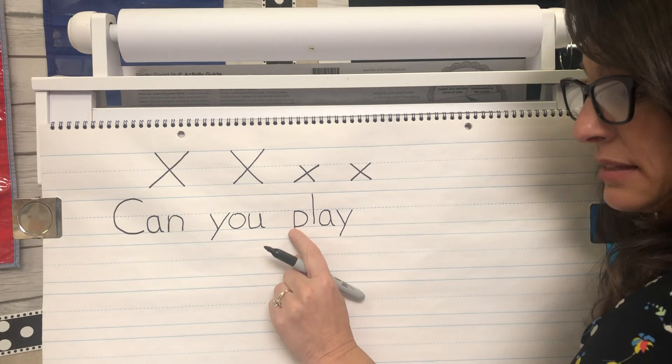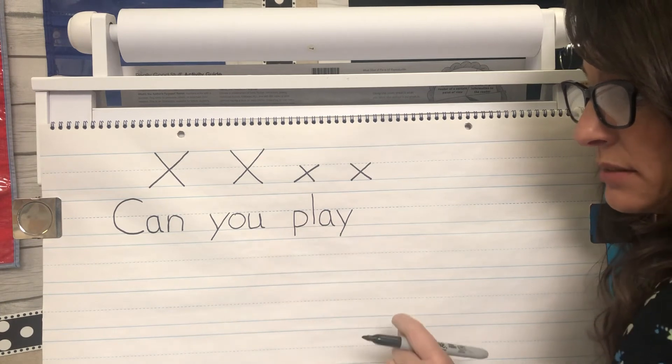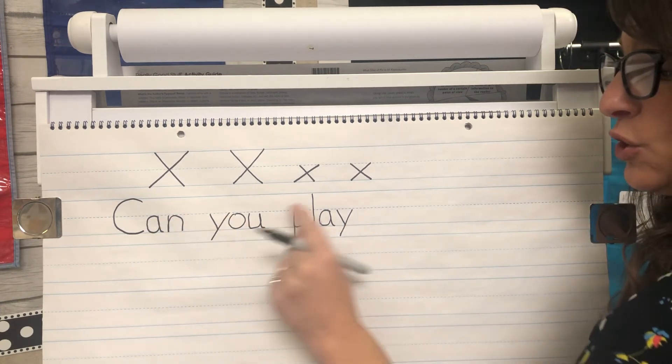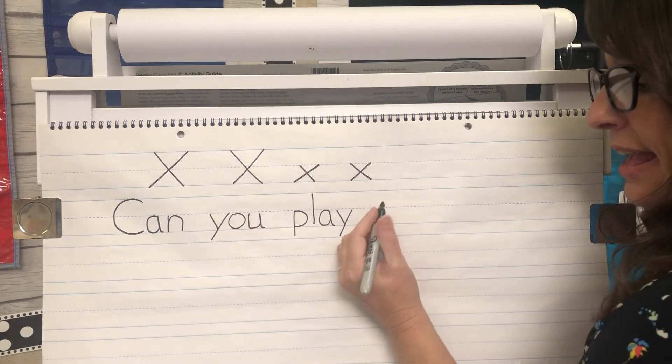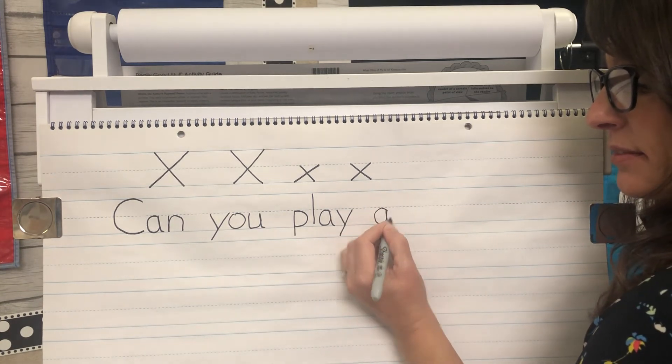And then remember there's a silent Y. Be careful. This P needs to go past the bottom line because it's lowercase. And so does the Y. Can you play, make a space, A, make a space,